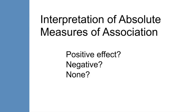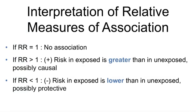How do I know if an exposure has a positive or negative effect on the disease? Or how do you know if the exposure doesn't have any effect at all? Here are the guidelines for relative measures of association, i.e., ratios. If the risk or rate ratio is equal to 1, then there is no association. If it is greater than 1, then the risk or rate in the exposed is greater than in the unexposed. If it is less than 1, then the risk in the exposed is lower than the unexposed.